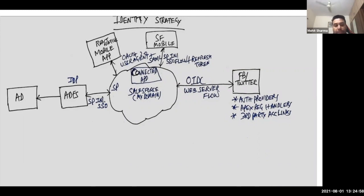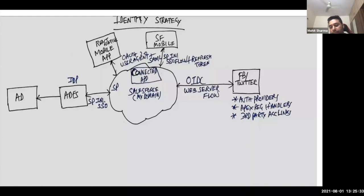The trust will be established between these two systems. My Domain is enabled by default on every new environment. The React Native mobile app will authorize to Salesforce via OAuth 2.0 user-agent flow layered with the SAML SP-initiated SSO flow. We'll also use a refresh token flow to provide seamless login experience in case the access token is expired, so the refresh token policy can be set to never expire. The same goes for the Salesforce mobile app. For Facebook and Twitter, we'll set them as auth providers. Apex registration handler with create and update methods will be used to create or update users, and third-party account links can be provided to users migrating to Salesforce. Authorization happens via OAuth web server flow.